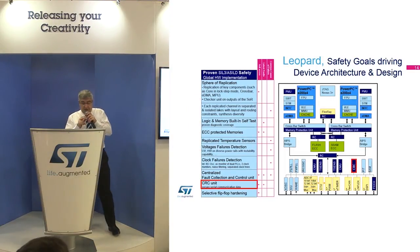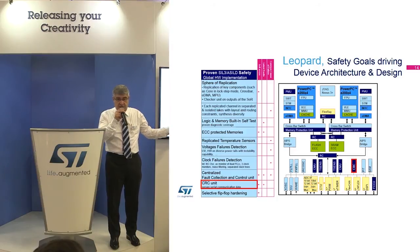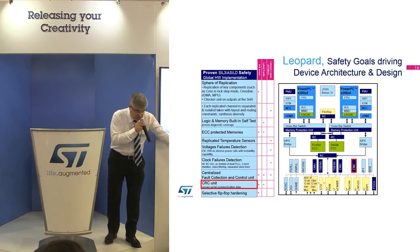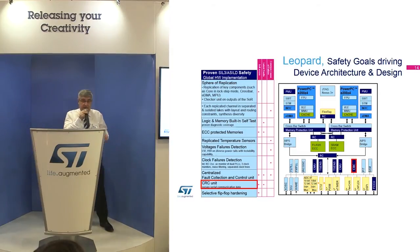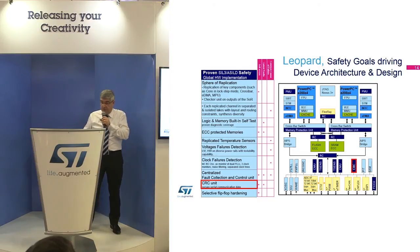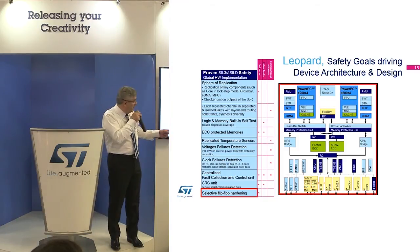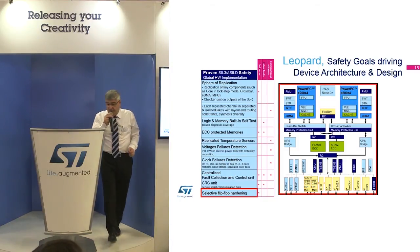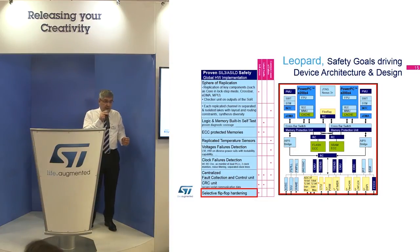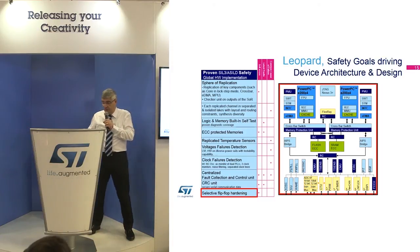We also have a CRC unit, which is used to provide a signature on every serial communication channel. All the peripherals you can see in light yellow — CAN, FlexRay, and so on — always have a CRC signature, so you can verify whether the data transmitted is correct. Thanks to the experience from our lab, we have developed a specific class of flip-flop that is insensitive to alpha and cosmic radiation, and we have used this to harden the structure of our device.